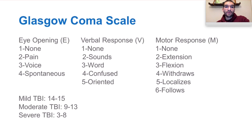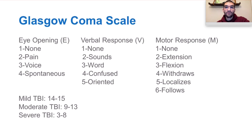If a patient comes in with moderate or severe TBI, they automatically get a CT head. On the other hand, if they come in with mild TBI, there are multiple scoring criteria to determine whether a CT scan is needed — for example, if they are retching multiple times, if they have not returned to a score of 15 within two hours, or obviously if they are on aspirin or Coumadin.